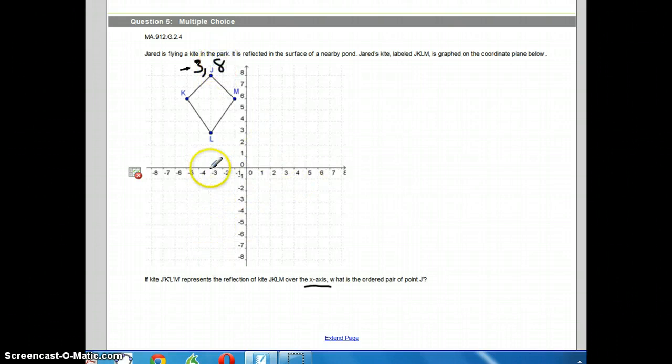The new point is going to still be at negative 3 because we're flipping over the x-axis. So it's still going to be at negative 3, but the other value, the y value, is going to go opposite.